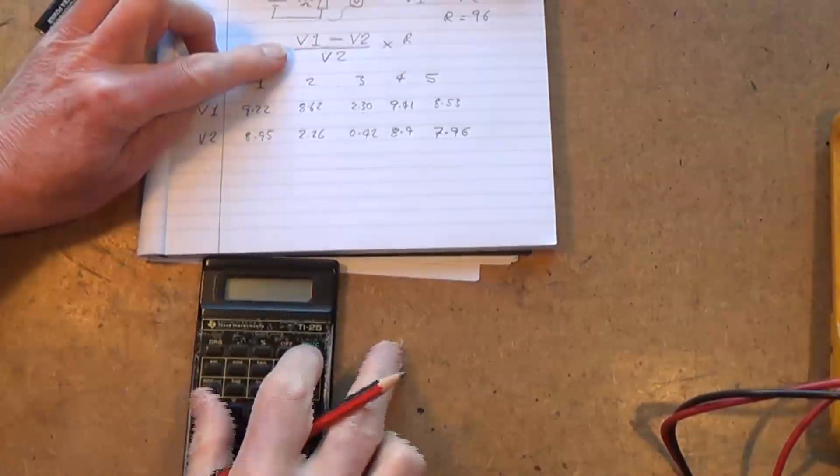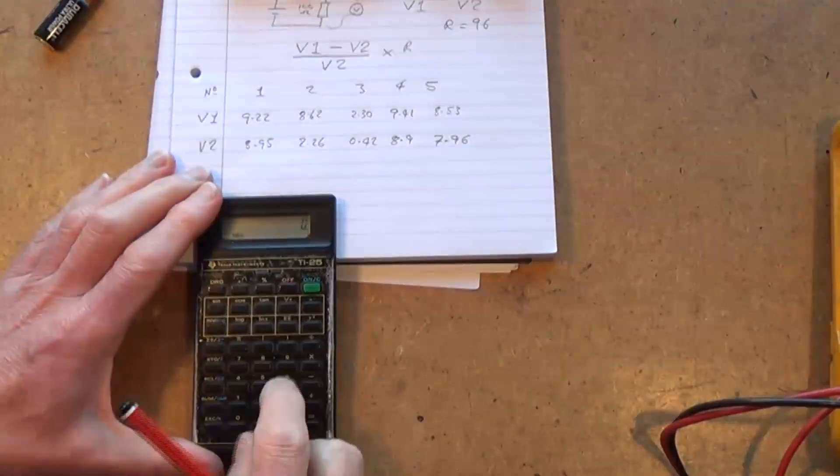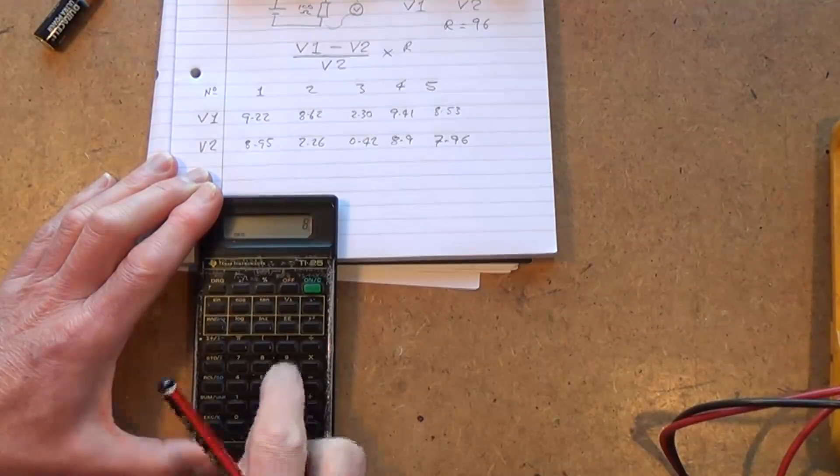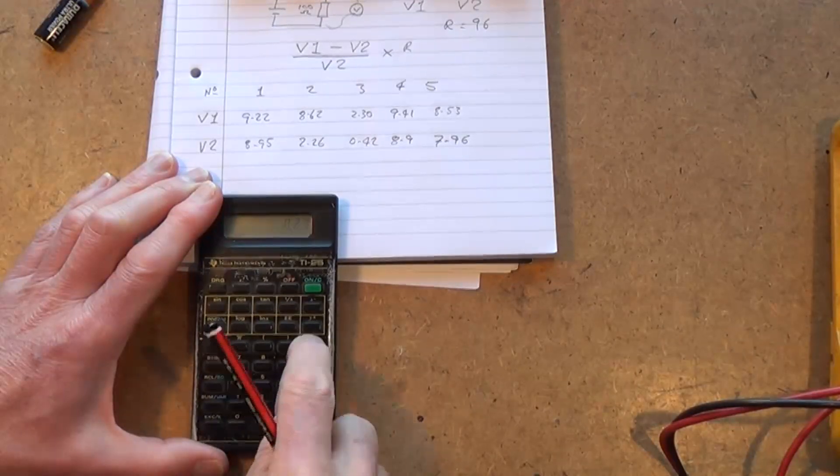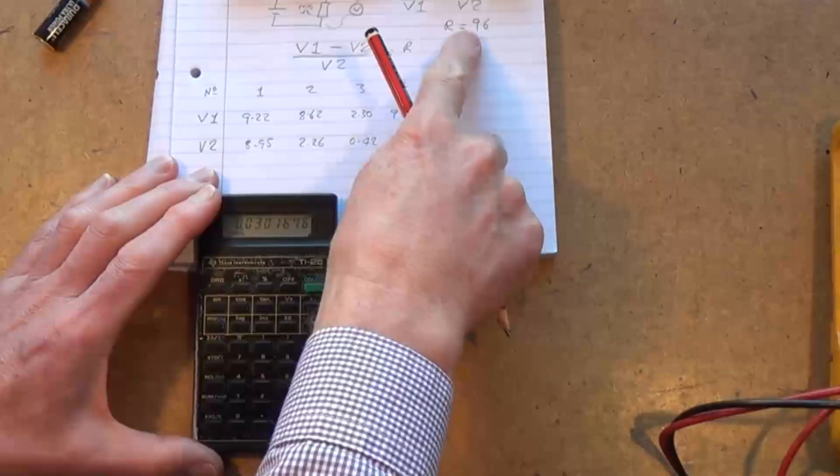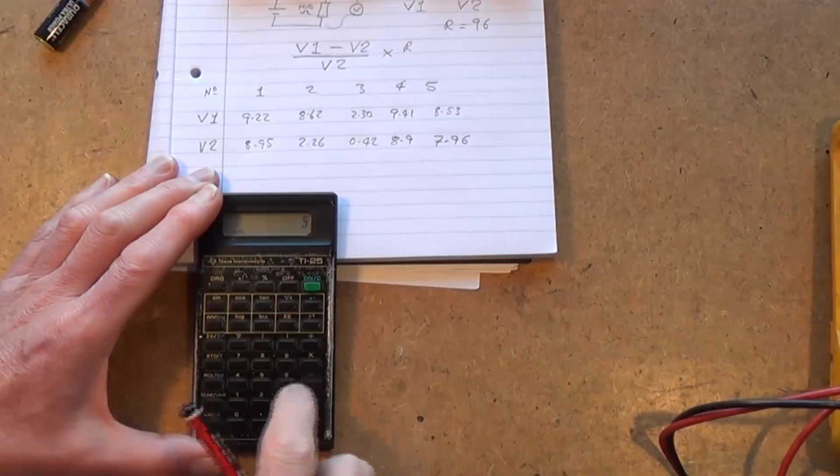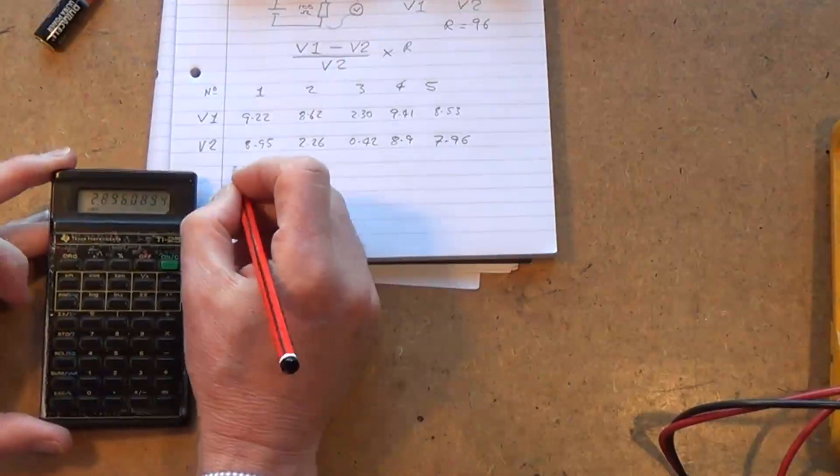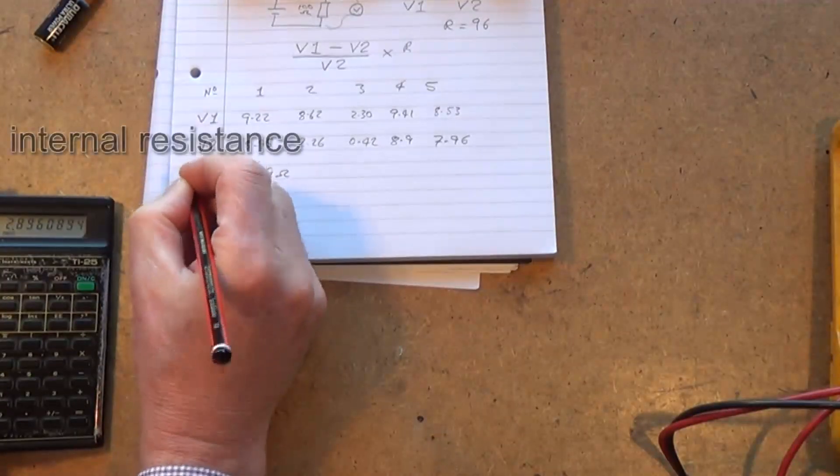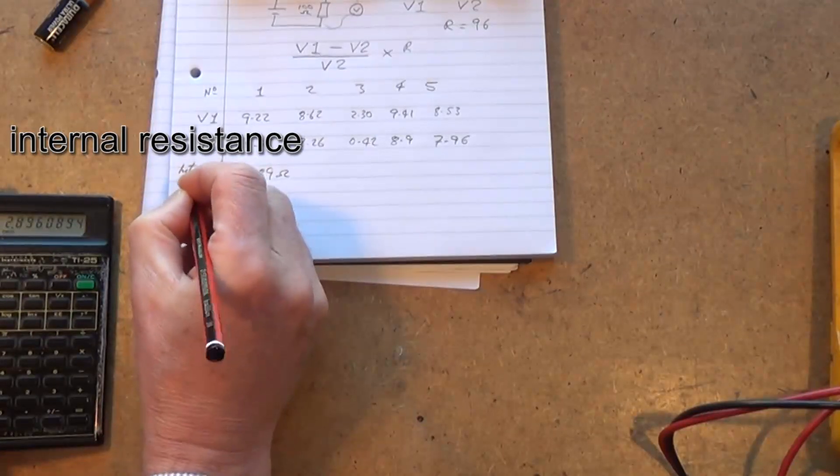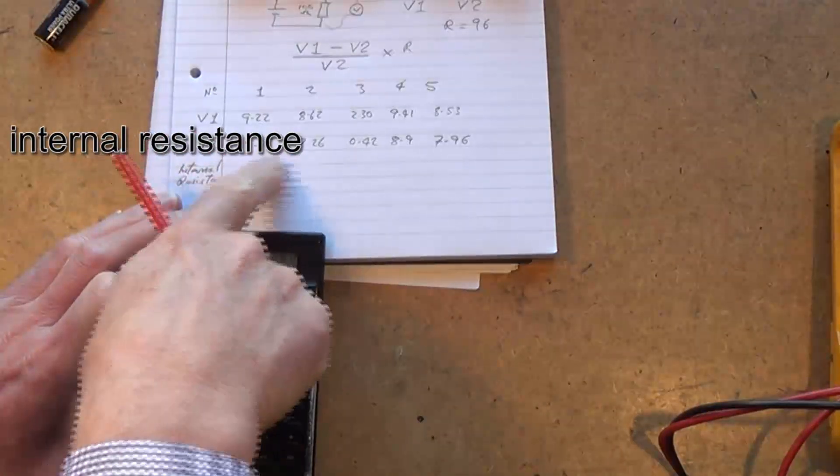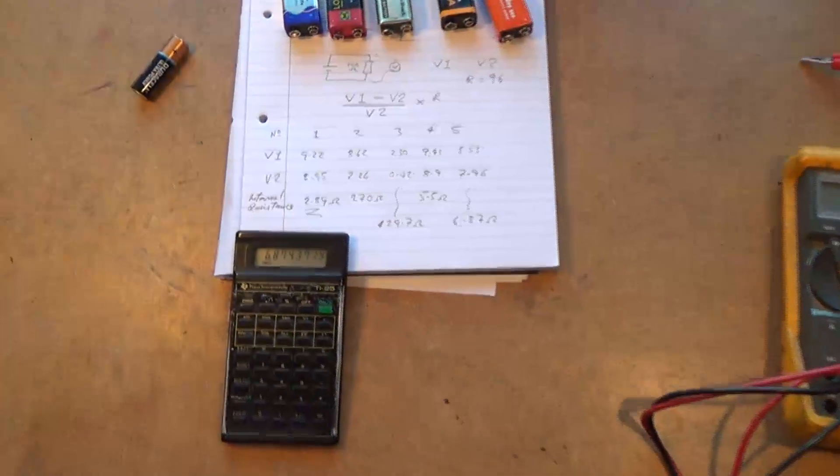From the formula there for the first one, we've got 9.22 minus 8.95 divided by V2 which is 8.95, and then we times it by the resistance which is 96 ohms times 96. That tells us that the internal resistance there is 2.89 ohms for that first one. Okay, and now I'll plug through those but I won't record it.